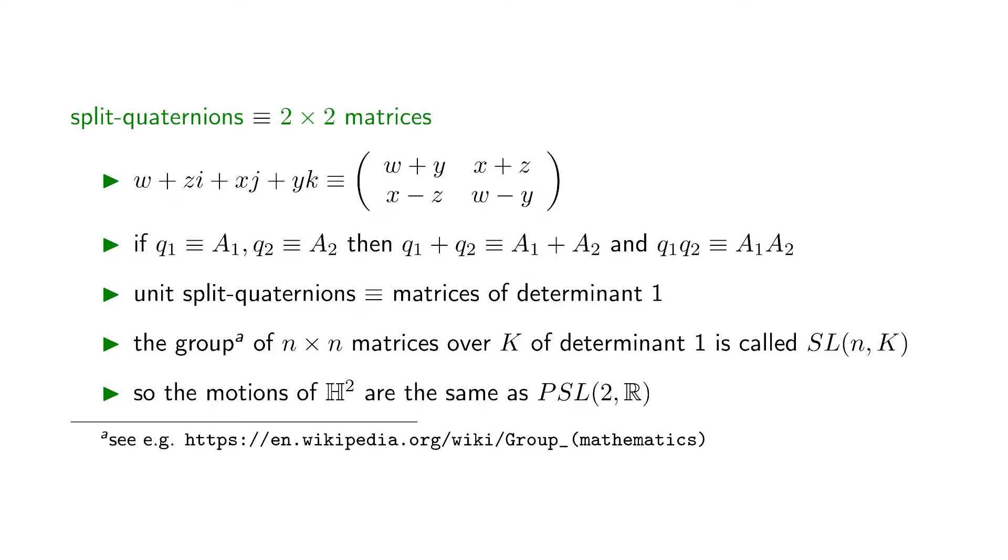The difference between SL(2,R) and the space of motions of H² is that, again, the opposite matrices are identified, so this is called PSL(2,R). The P here stands for projective, and refers to unifying the antipodes.